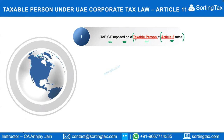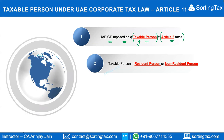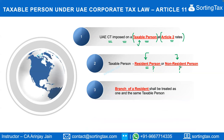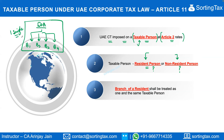For UAE corporate tax purposes, a resident company and all its branches are treated as one single taxable person — meaning branches do not need to file separate tax returns or undertake separate compliance. The entity level is where the return will be filed, similar to economic substance regulations where only one single ESR report is filed for the parent company and all its branches.